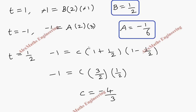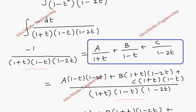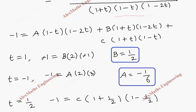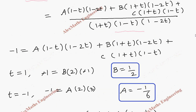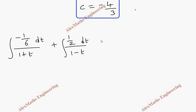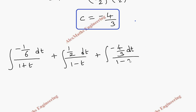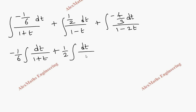Now we substitute these three values back into the partial fraction expression. We have: integral of (minus 1/6) divided by (1 plus t) dt, plus integral of (1/2) divided by (1 minus t) dt, plus integral of (minus 4/3) divided by (1 minus 2t) dt. Rearranging by taking all constants outside: minus 1/6 times integral of dt/(1 plus t), plus 1/2 times integral of dt/(1 minus t), minus 4/3 times integral of dt/(1 minus 2t).